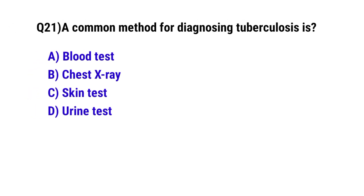Question number 21. A common method for diagnosing tuberculosis is. The correct option is B: chest X-rays.